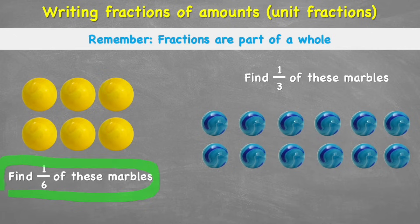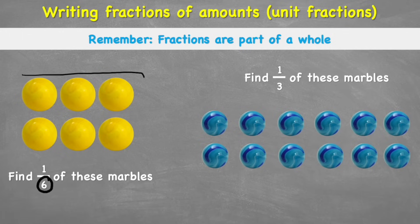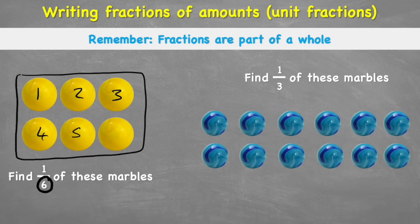It says: find 1 sixth of these marbles. This first one is pretty easy because we actually only have 6. So my denominator is the same amount that we have when we've split our marbles up — we have 1, 2, 3, 4, 5, and 6. So I don't need to do any extra maths there. To find the quantity — to find how many of these marbles 1 sixth is — all I need to do is colour one of them. So my answer to what 1 sixth of these marbles is, is just 1.